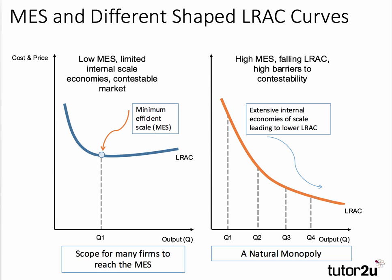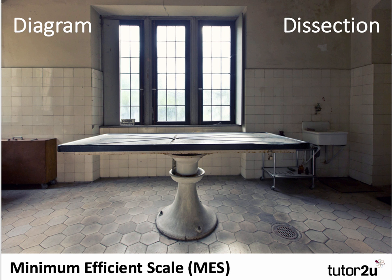But we'll do a separate revision video on natural monopolies for you. So there we go — that's the key diagram relating to the minimum efficient scale.